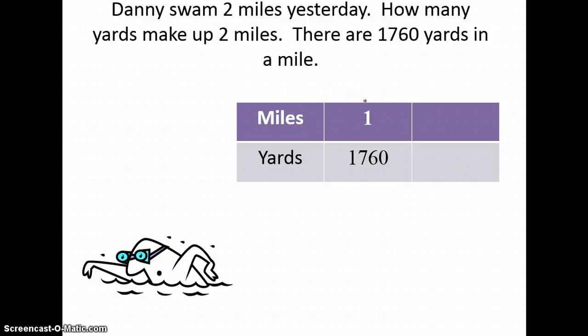I ask myself, what other information have I been given? In the problem, I was told that Danny swam 2 miles yesterday. So in the miles row, I'm going to write a 2 to show that I have 2 miles that I'm looking for. Now, how do I get from 1 mile to 2 miles? I multiply by 2. So I also need to multiply 1,760 by 2.